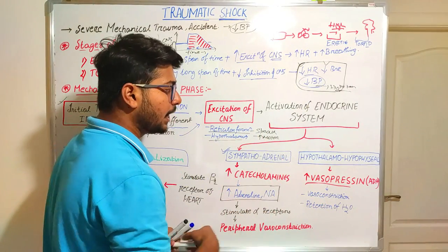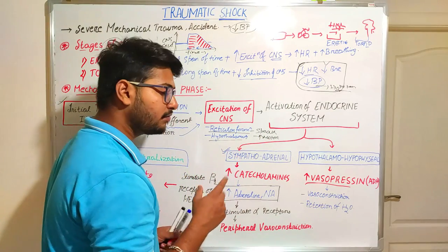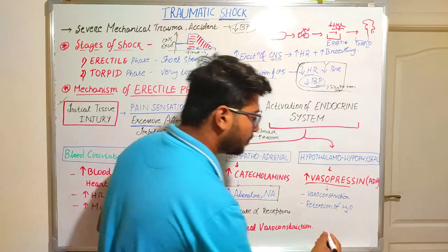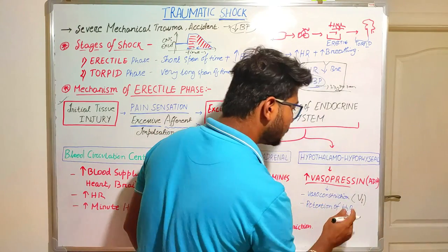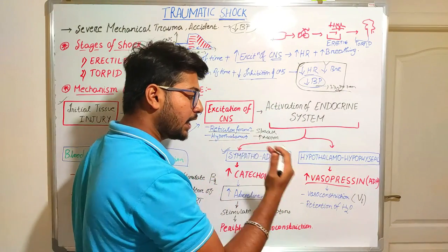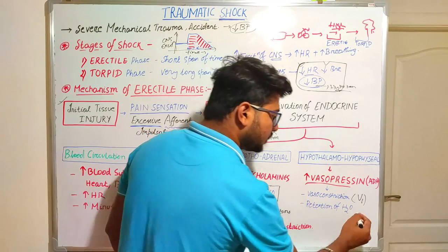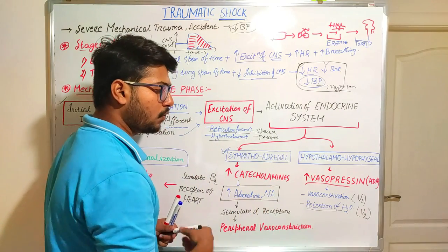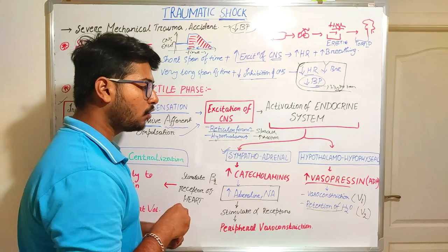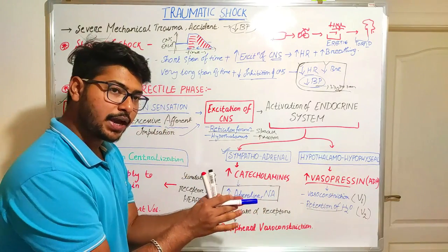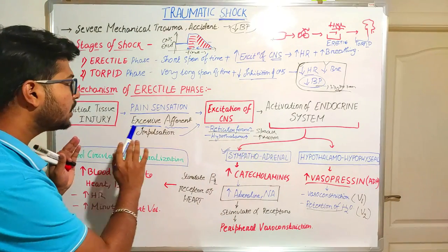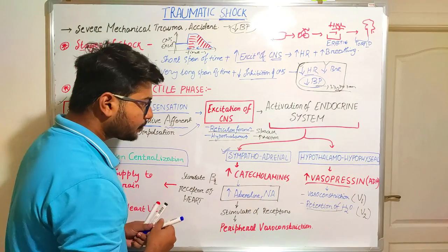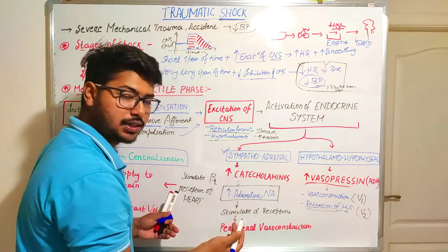Vasopressin has two main functions: first, vasoconstriction, and second, retention of water. Vasoconstriction occurs through V1 receptors present in blood vessels. V2 receptors are present in the kidney and help in retention of water to maintain equilibrium — this is a compensatory mechanism of our body. All this is a compensation to the shock, which is why it is the first phase of shock.